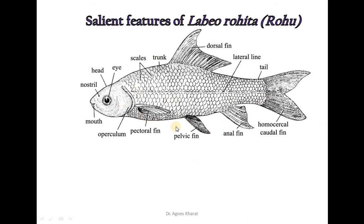This is the diagrammatic representation of Labeo rohita. The body is divided into head, trunk, and tail region. The head bears the mouth, nostrils, and a pair of eyes. The operculum covers the gill slits. There are paired pectoral fins, pelvic fins, anal fins, and an unpaired dorsal fin. The tail has a homocercal type of caudal fin.